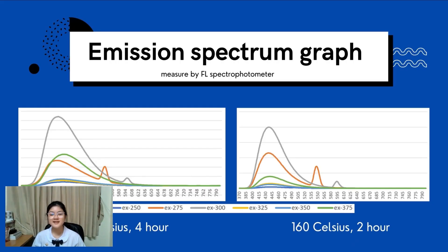And this is the graph of emission spectrum of Nitrogen-Doped Graphene Quantum Dot synthesized at 160 degrees Celsius at four and two hours, measured by fluorescent spectrophotometry.